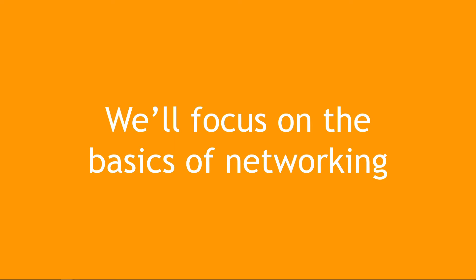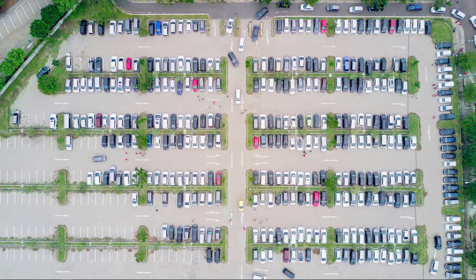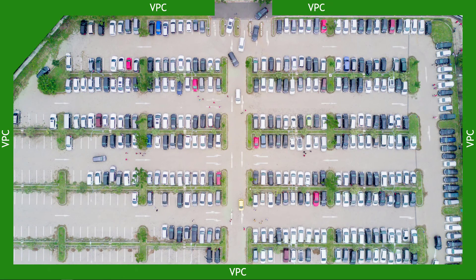I heard an analogy once that compared networking in AWS to a parking lot, which I found really helpful for understanding the core concepts. Here's a parking lot — outside of it is the whole world, the AWS world. The fence or border around the parking lot can be thought of as your VPC. It separates your resources from the rest of the resources in AWS.